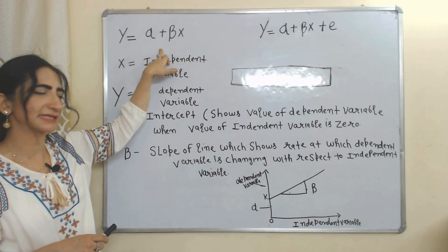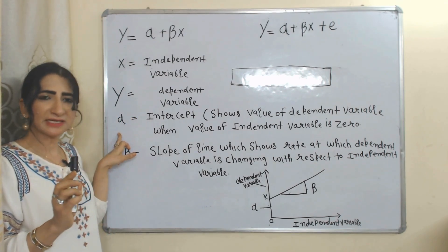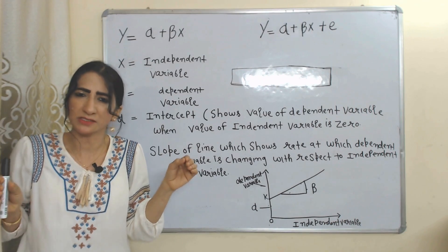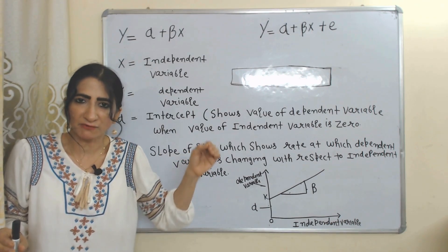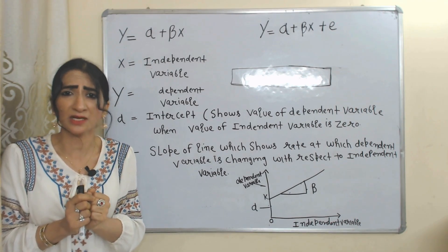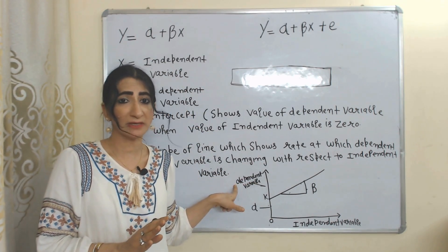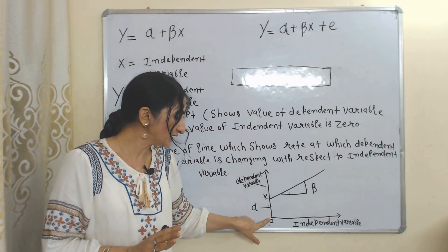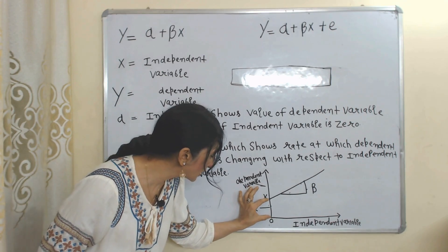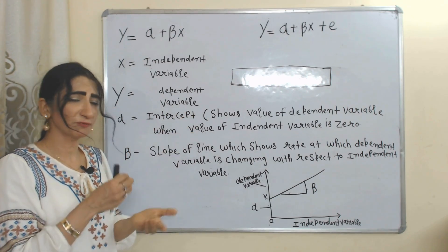This gives us our initial equation: y = α + βx, where x is the independent variable, y is the dependent variable, and alpha (α) is the intercept, which shows the value of the dependent variable when the value of the independent variable is zero. In this diagram, on the x-axis we have the independent variable and on the y-axis we have the dependent variable. When x is zero, the value of y equals alpha.